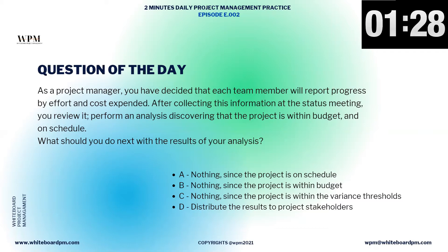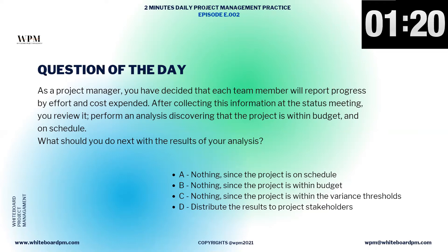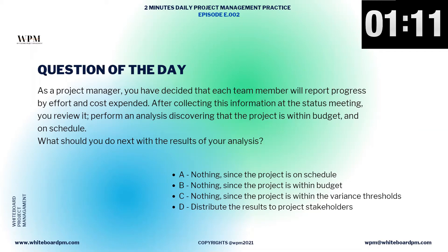A. Nothing, since the project is on schedule. B. Nothing, since the project is within budget. C. Nothing, since the project is within the variance thresholds. D. Distribute the results to project stakeholders.